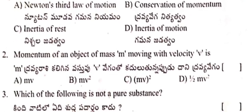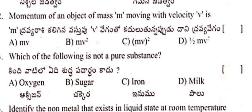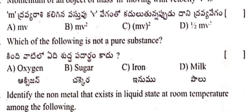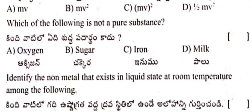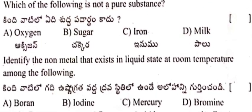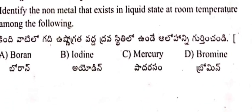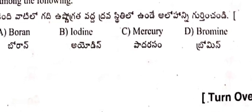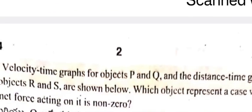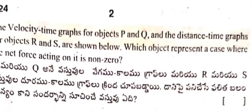See till the end. Momentum of an object of mass m moving with velocity V is mv. Which of the following is not a pure substance: oxygen, sugar, iron, or milk? Identify the non-metal that exists in liquid state at room temperature among the following: boron, iodine, mercury, bromine.